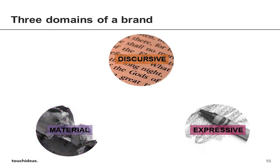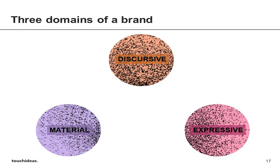The discursive domain is a multiplicity of texts, of cultural texts. This is more the domain of writers, journalists, bloggers — people who cope with language, but also visual language as well. So it's a multiplicity of texts. And the expressive domain is a multiplicity of forms — the domain of art and design, the language of people coping with different kinds of forms. It could be visual, musical, performative — any types of expressive forms of expression.